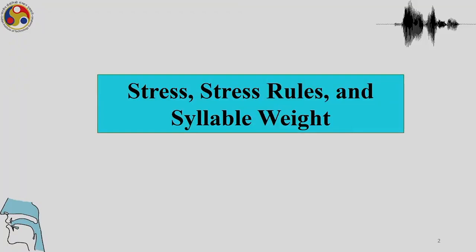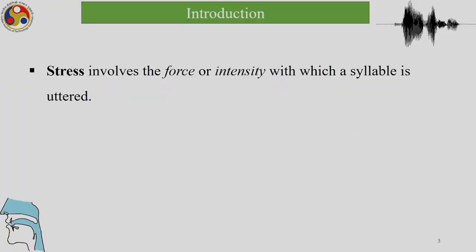We talked about syllables in the last lecture. You had seen how the syllable is the nucleus of the unit 'syllable', and then you have onset and coda, and how you have various rules of assignment of onset and coda. Today we talk about another aspect of the syllable, which is stress, stress rules, and syllable weight.